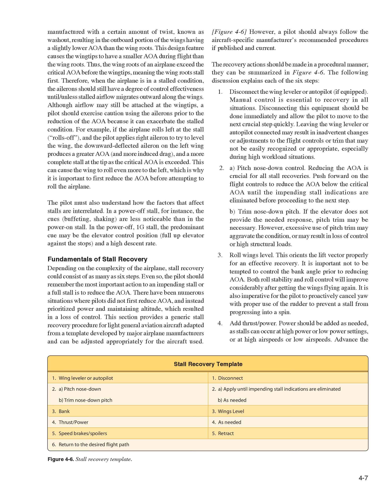The pilot must understand how the factors that affect stalls are interrelated. In a power-off stall, the cues — buffeting and shaking — are less noticeable than in a power-on stall. In the power-off 1G stall, the predominant cue may be the elevator control position at full-up elevator against the stops, and a high descent rate. The pilot should remember the most important action for an impending stall or a full stall is to reduce the AOA. There have been numerous situations where pilots did not first reduce AOA, and instead prioritized power and maintaining altitude, which resulted in a loss of control.